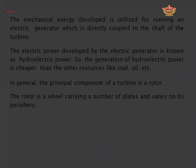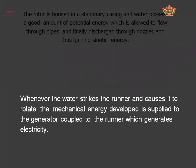The electrical power developed by the electrical generator is known as hydroelectric power, and the generation of hydroelectric power is cheaper than other resources like coal, oil, etc. The principal component of the turbine is the rotor. The rotor is a wheel carrying a number of plates and vanes on its periphery. The rotor is housed in a stationary casing, and water possessing a good amount of potential energy is allowed to flow through a pipe and finally discharged through a nozzle, gaining kinetic energy.